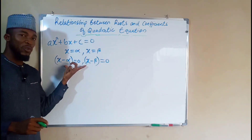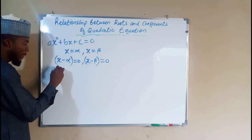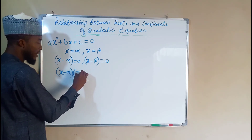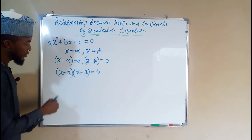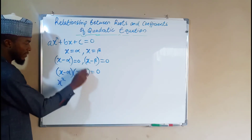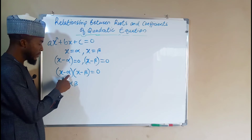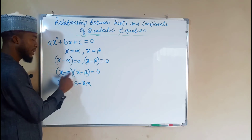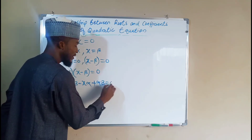If we multiply these two factors together we obtain the original quadratic equation. So we have (x - alpha)(x - beta) = 0. Distributing: x times x gives x², x times negative beta gives -x·beta, negative alpha times x gives -x·alpha, and negative alpha times negative beta gives positive alpha·beta. The whole expression equals zero.